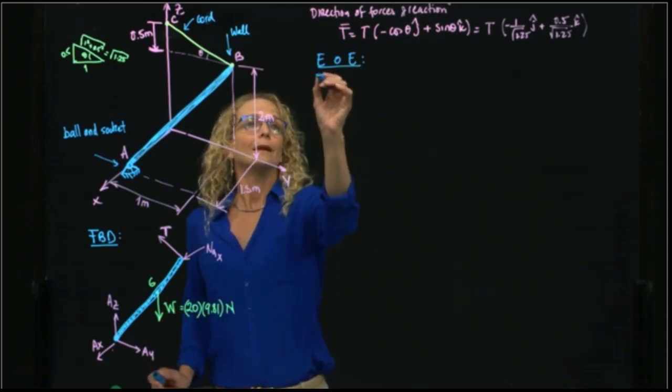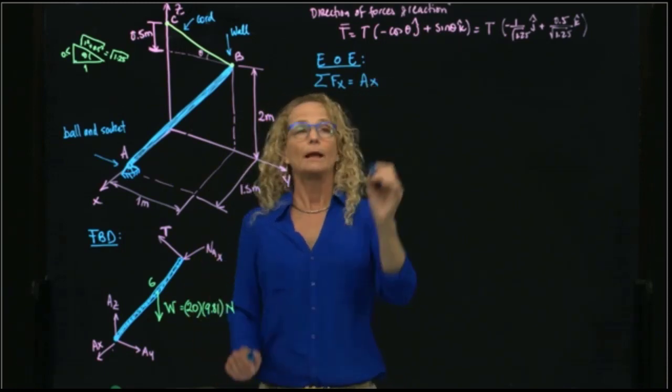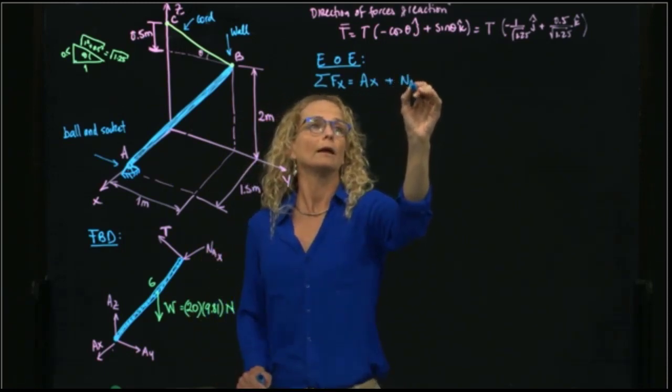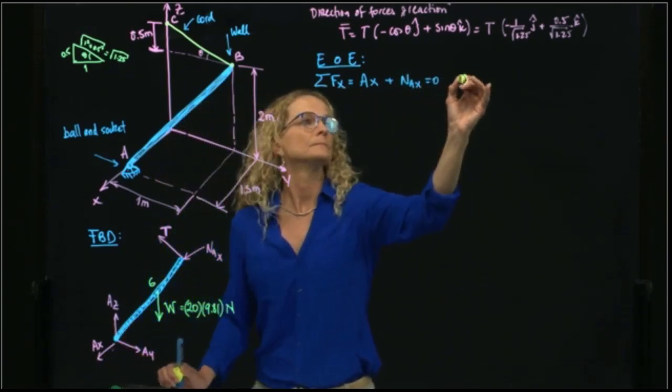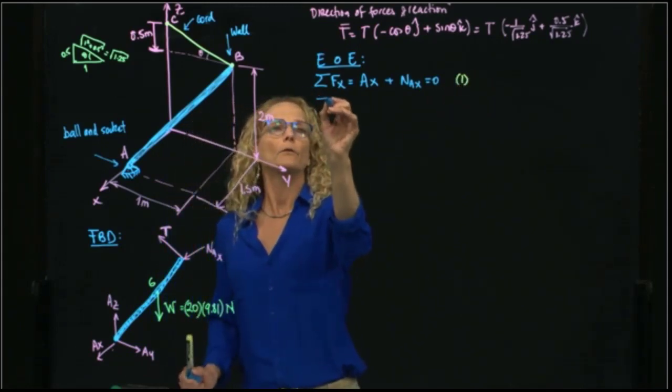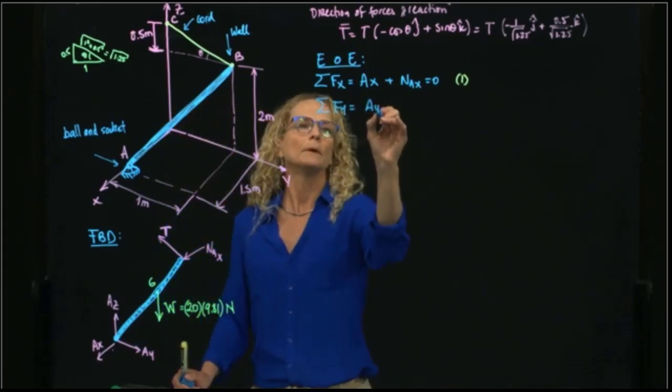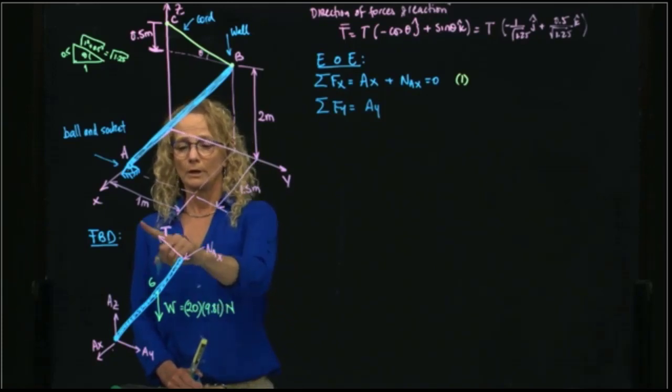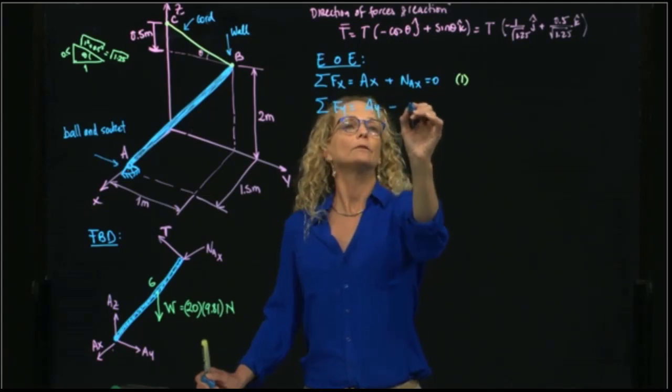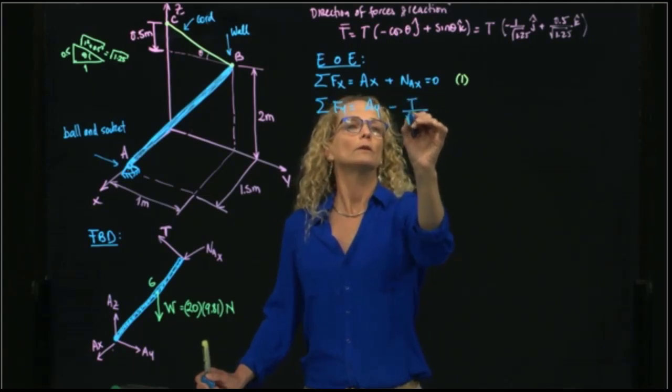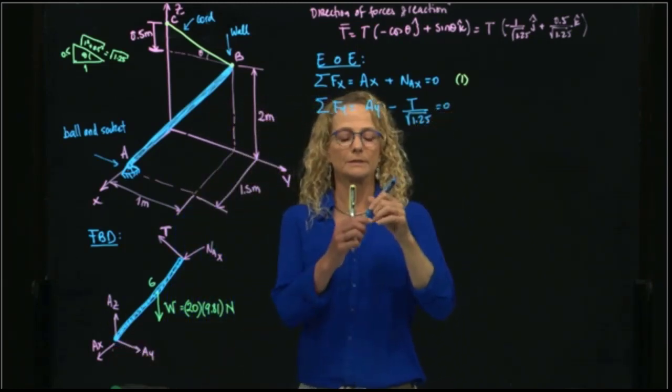We add forces in X, and in X we have Ax plus that force Nx equals 0. So that will be our first equation. The second equation will be adding forces in Y. Forces in Y, I have Ay, and then I have the tension, the component of the tension that is in Y. So that will be negative tension over square root of 1.25. And I do not have any other force, so this is my second equation.